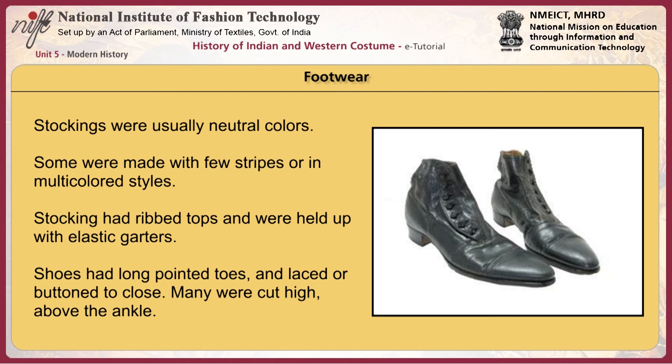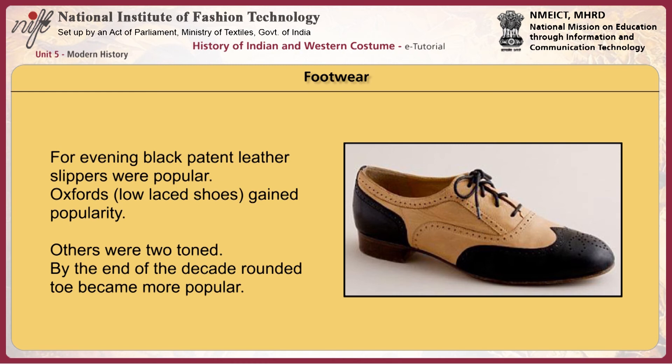Shoes had long pointed toes and laced or buttoned to close; many were cut high above the ankle. For evenings, black patent leather slippers were popular. Oxfords, which were low-laced shoes, gained popularity, and others were two-toned. By the end of the decade, rounded toes became more popular. Accessories included gloves, handkerchiefs, and scarves. Walking sticks were popular until automobiles became widespread. Jewellery was limited to tie pins, shirt studs, rings, and cufflinks. Wrist watches gained popularity with the automobile.